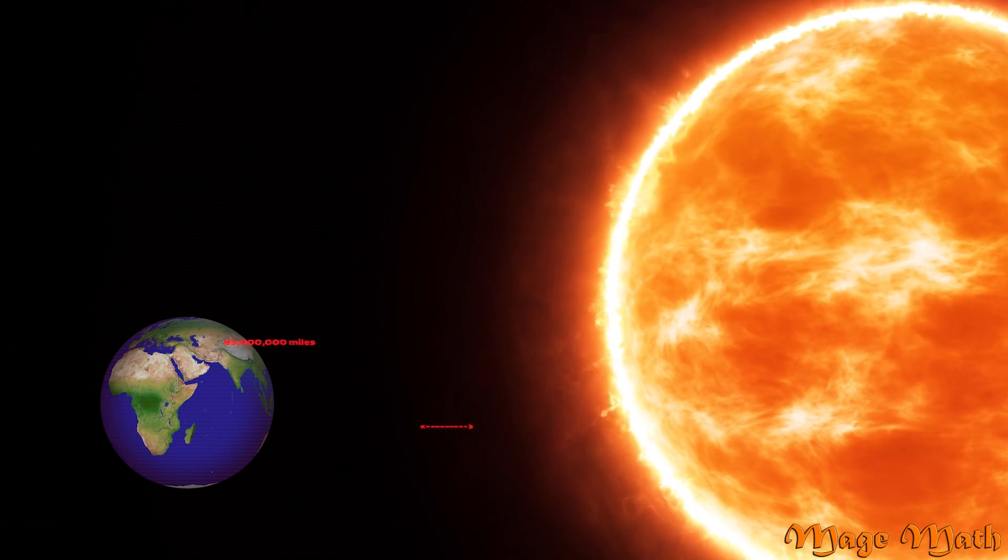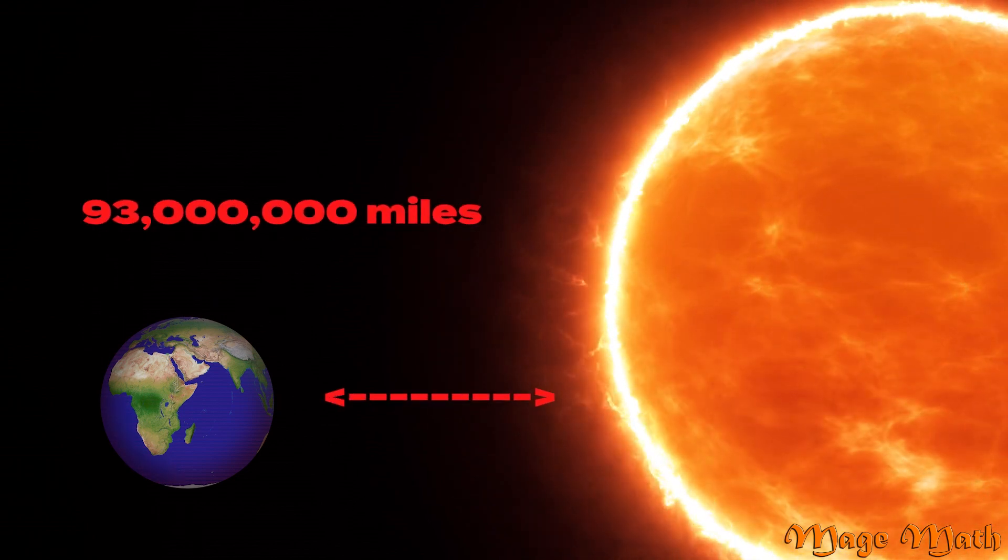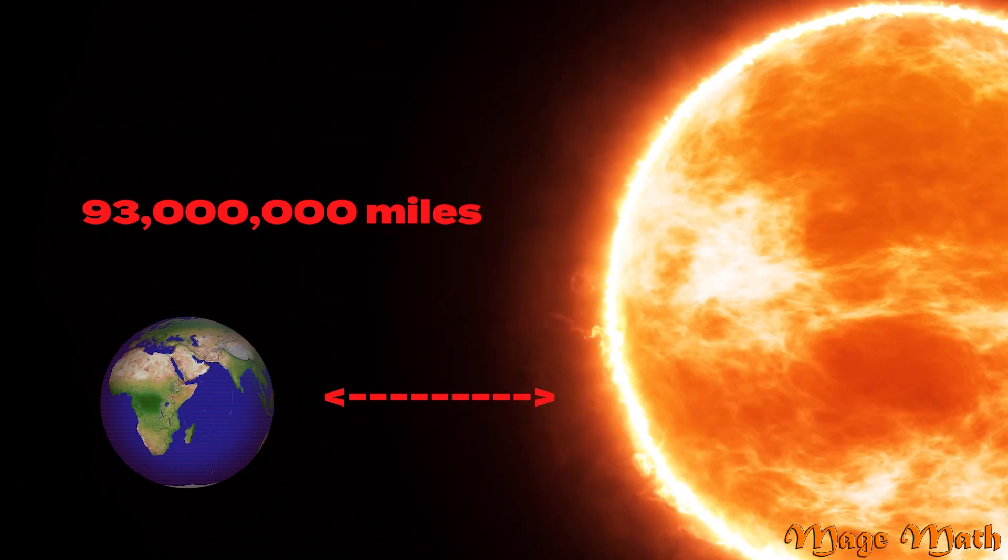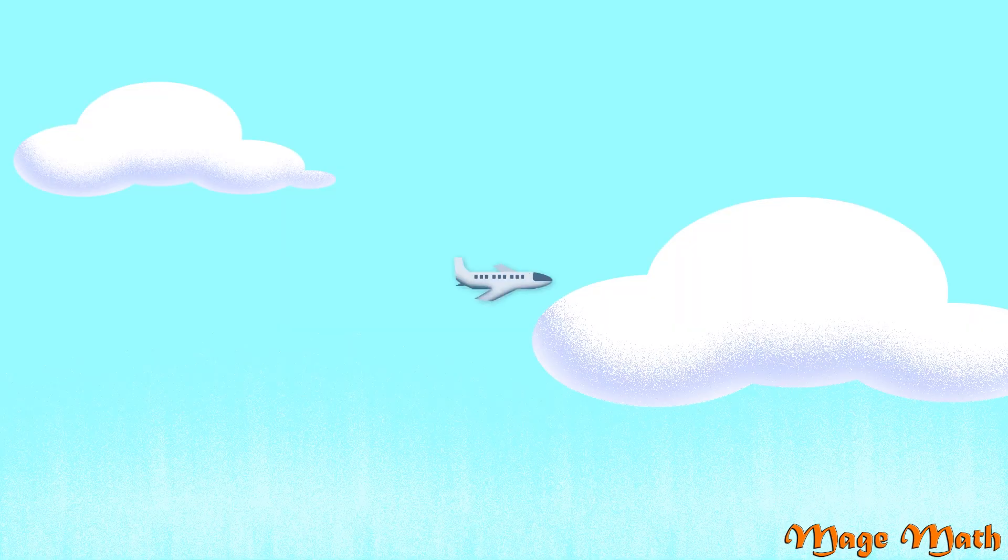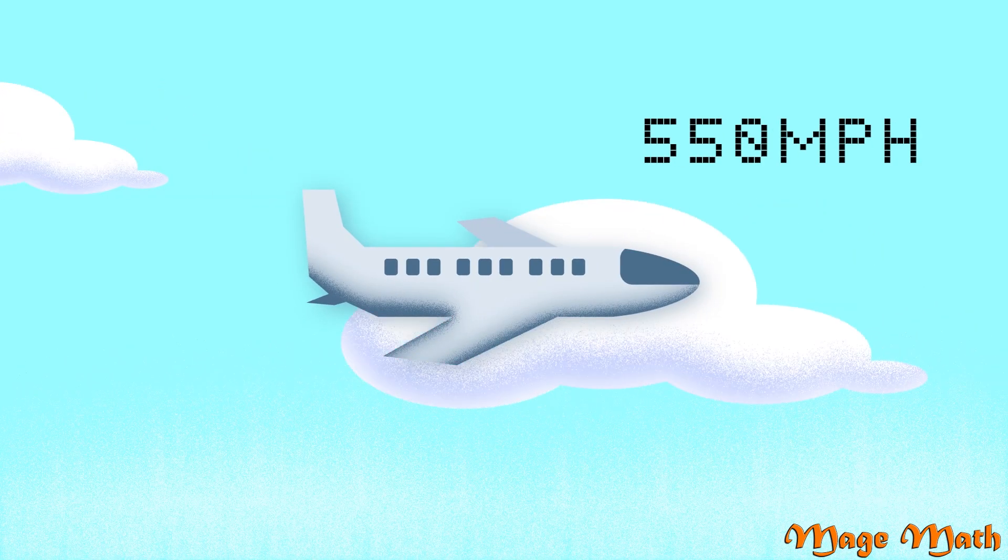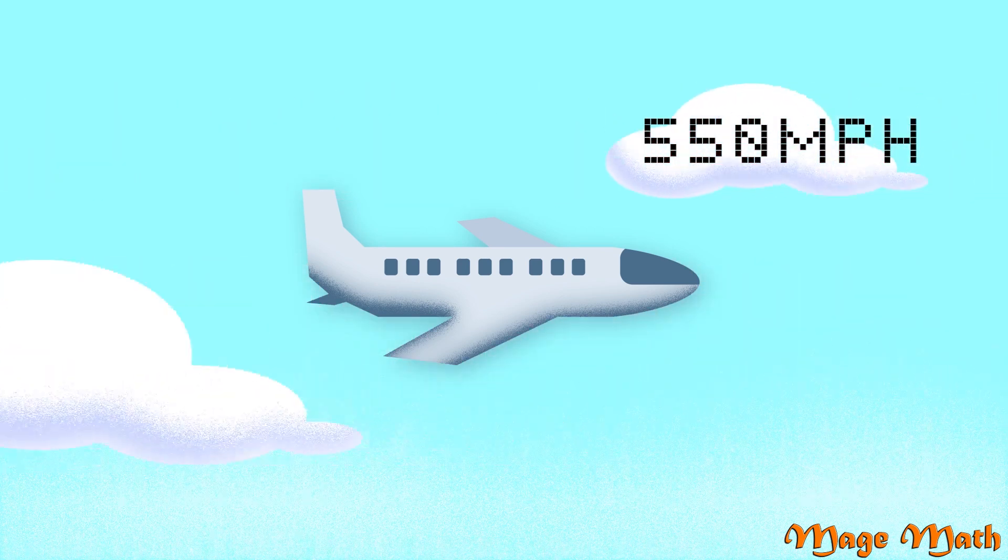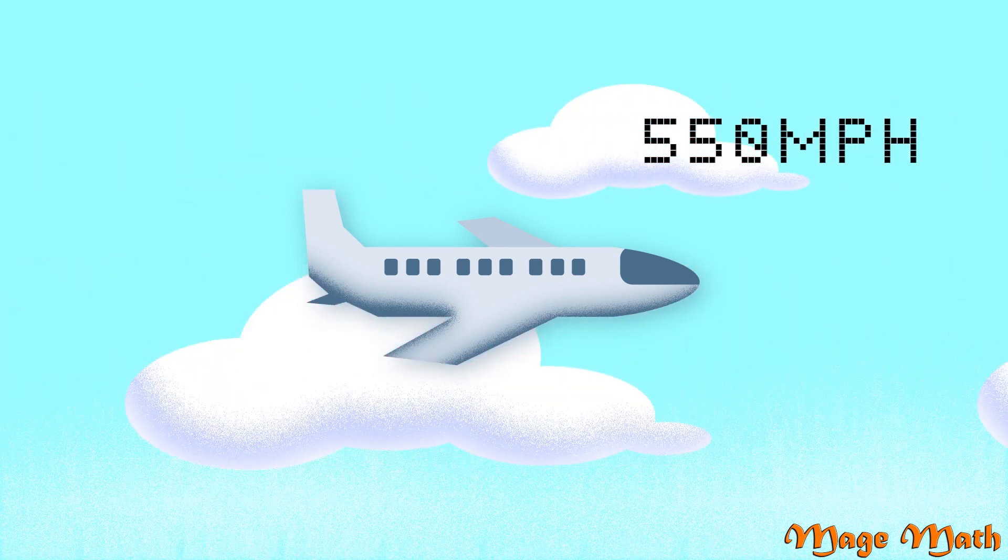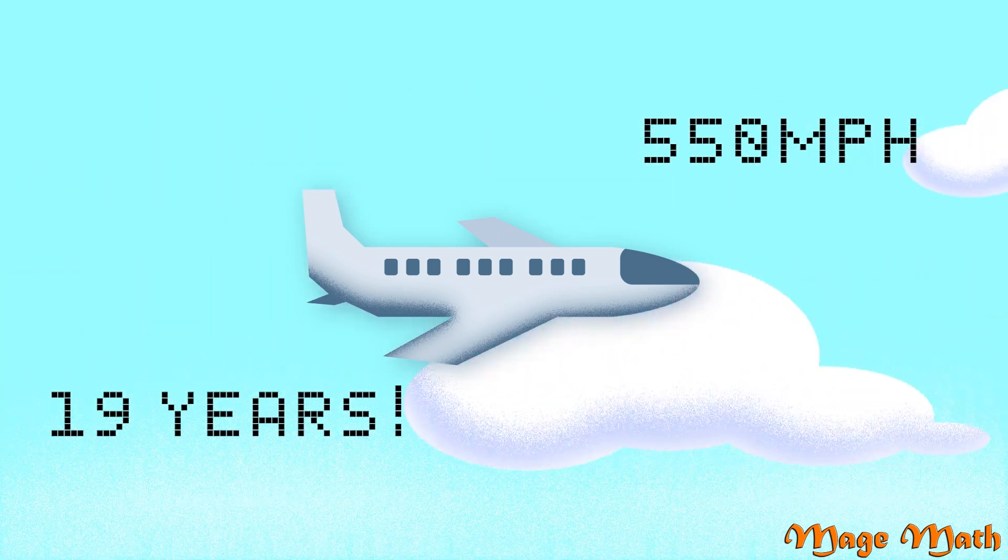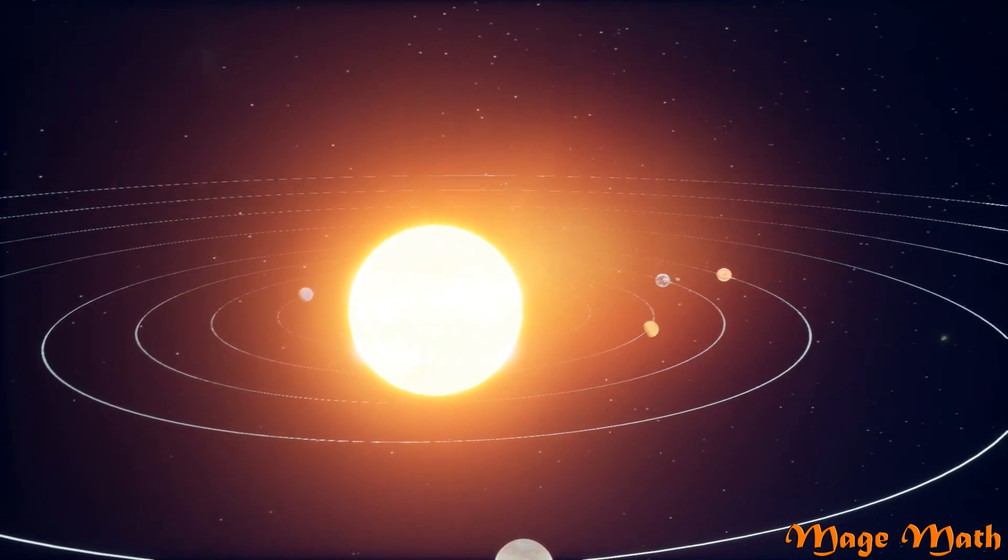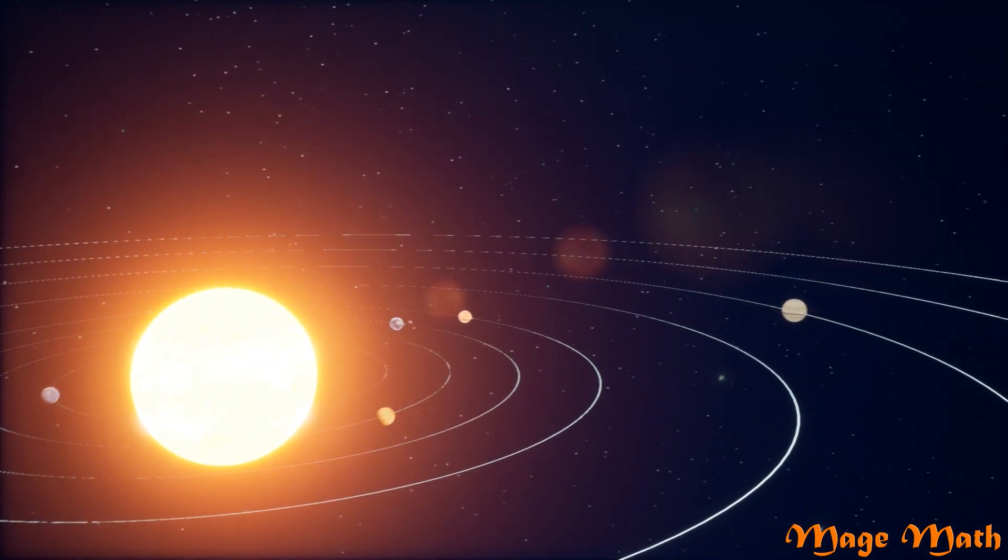The earth is around 93 million miles away. That is a very far distance to understand. Let's say you got on a plane that can travel around 550 miles per hour. Even being on an airplane going that fast, it would still take over 19 years to get there. Thanks, Bob. The sun is huge and very important to us and our solar system.